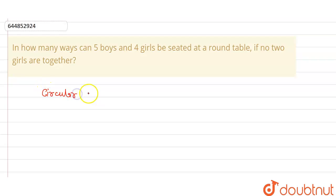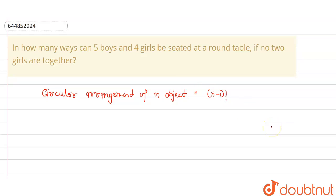The circular arrangement of n objects is equal to (n-1) factorial. Since we want no two girls to sit together, they should be seated at alternative places.